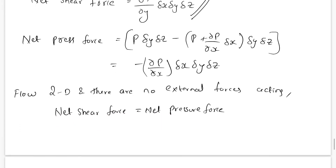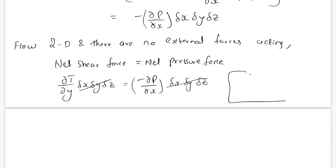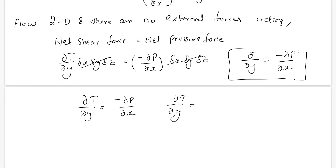Equating the two: (∂τ/∂y)·δx·δy·δz = −(∂p/∂x)·δx·δy·δz. The δx·δy·δz terms cancel from both sides. The end result is: ∂τ/∂y = −∂p/∂x. That is, the shear gradient in the y direction equals the negative of the pressure gradient in the x direction.